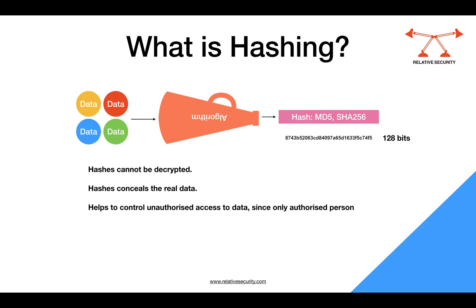reflection of what that data is about. If there is any change afterwards in the data, this 128 or 256-bit string is going to change — it will reflect that. For example, at 7 PM when the hash was calculated, if at 8 PM there is a modification in the data, it's not the same data for which the hash was calculated. To ensure that the data does not change, we calculate the hash at any given point, and at a later stage — after a week, a month, or any given period — when you need to verify,